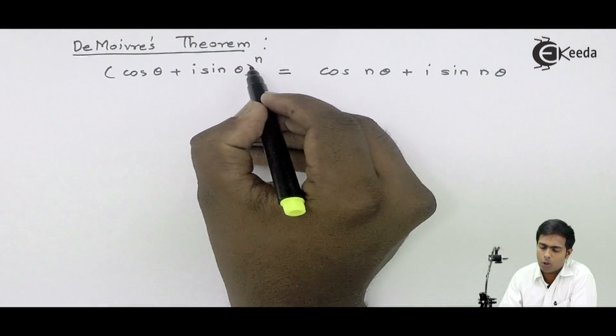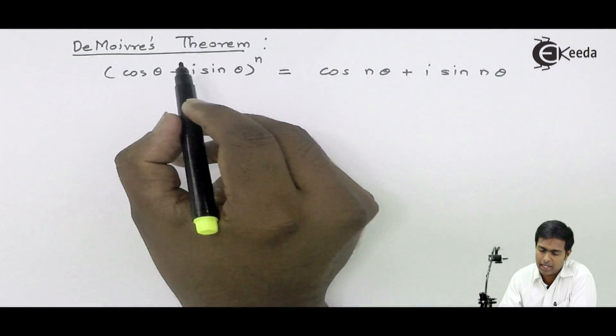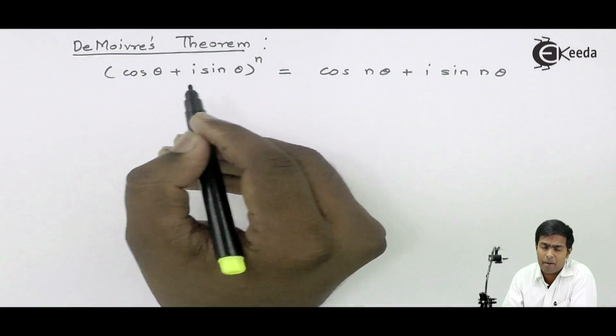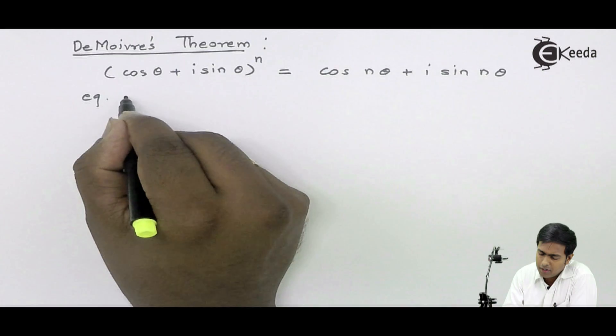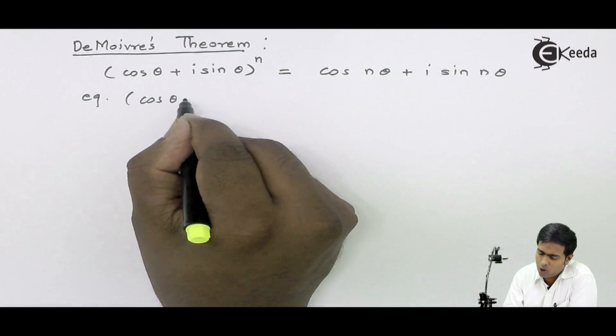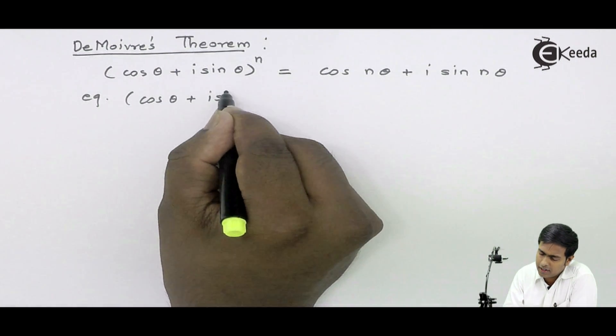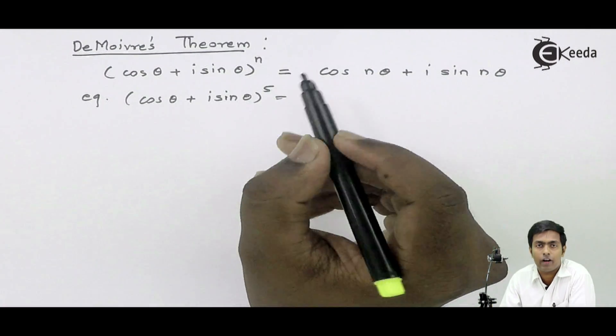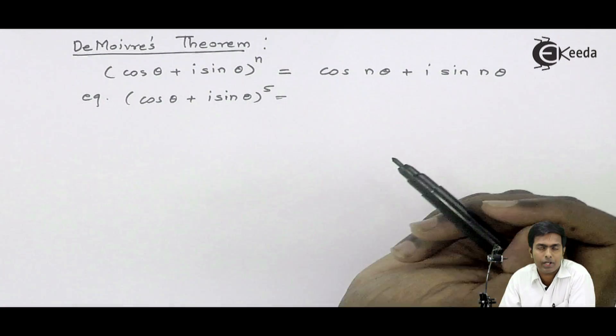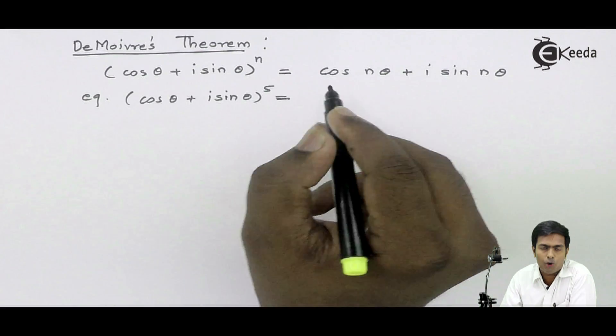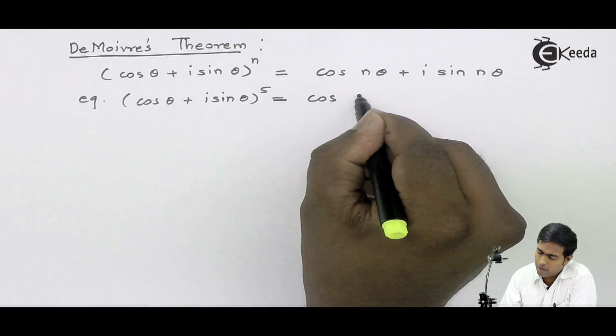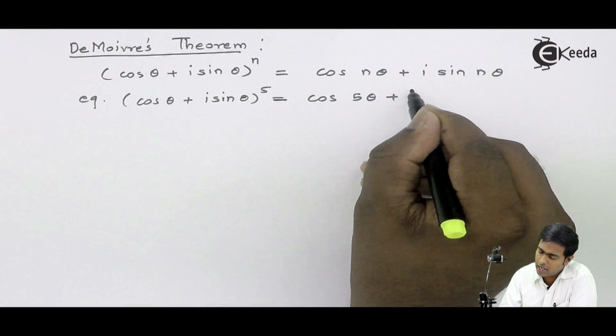Let's take an example. If you have a complex number (cos θ + i sin θ) raised to 5, it means you want to find the fifth power of this complex number. According to De Moivre, it will become cos(5θ) + i sin(5θ).